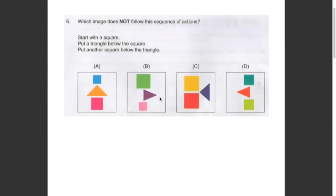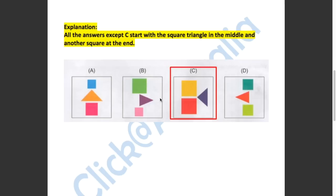This question asked us which image does not follow the sequence of actions. All the answers except C start with a square, triangle in the middle, and another square at the end. So the answer has to be C.